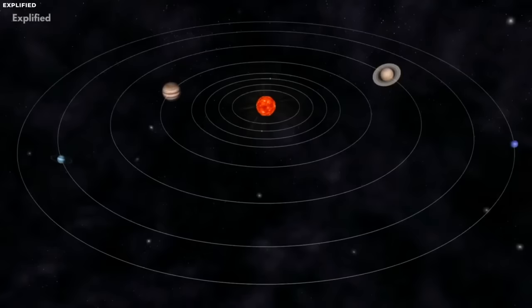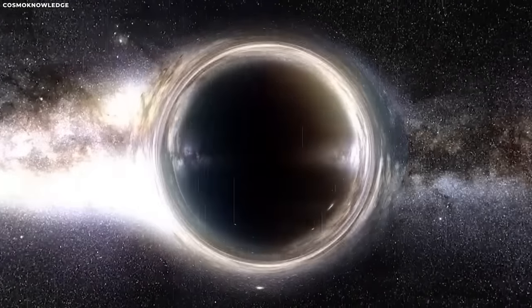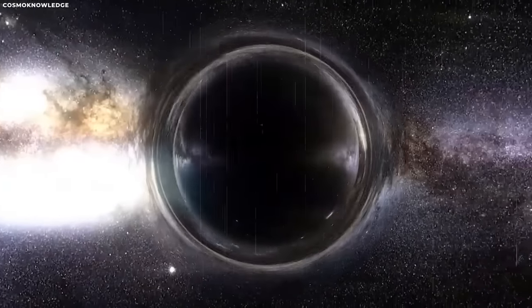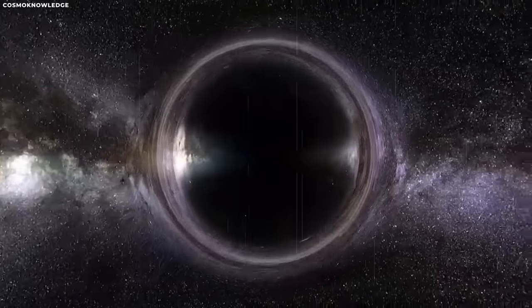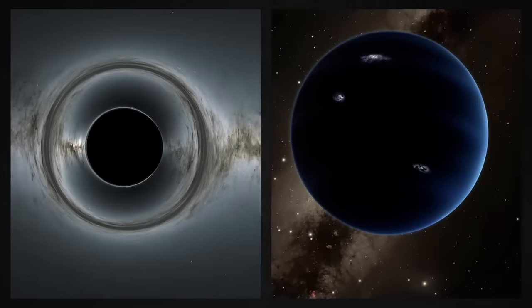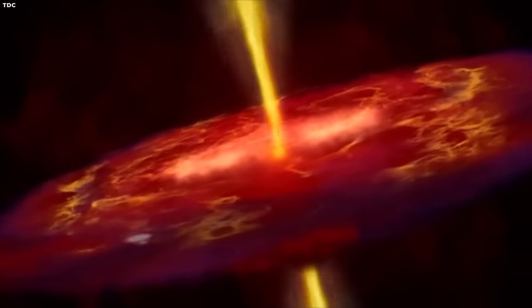Not everyone, however, embraced the idea put forth by Batygin and Brown. Physicists Jacob Schultz and James Unwin proposed an alternative theory. They suggested that a minuscule black hole could be responsible for the disruptive orbits of several rocky objects surrounding Neptune. In their view, this black hole, much like Planet X, might have originated from a distant star system and found itself circling our Sun after a close encounter with our solar system.